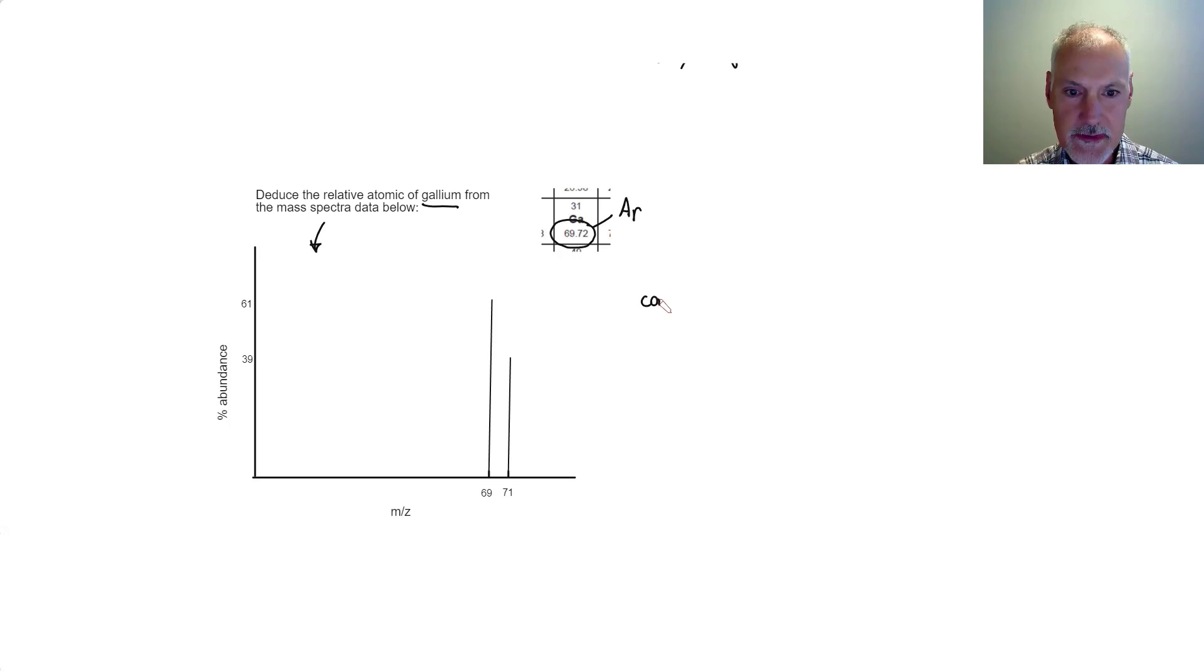So we're going to start off by considering a hundred atoms. The relative mass then of those 100 atoms would be, well, 61 of them weigh 69, and 39 of them would weigh 71. So multiplying that together, I get 6,978. So that represents the mass of my 100 atoms.